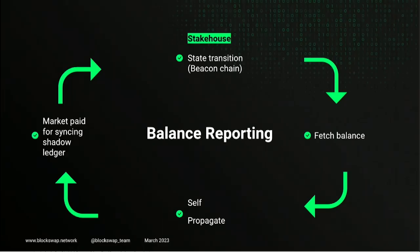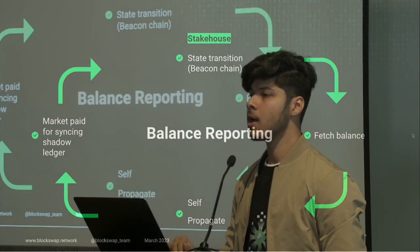Now talking about what balanced reporting is. You've got your consensus layer and your execution layer. Fees and MEV come from the execution layer, whereas attestation and proposal rewards come from the consensus layer. We need to take note of that — the execution layer doesn't know what's happening with the validator on the consensus layer. So for this, we've come up with balanced reporting.